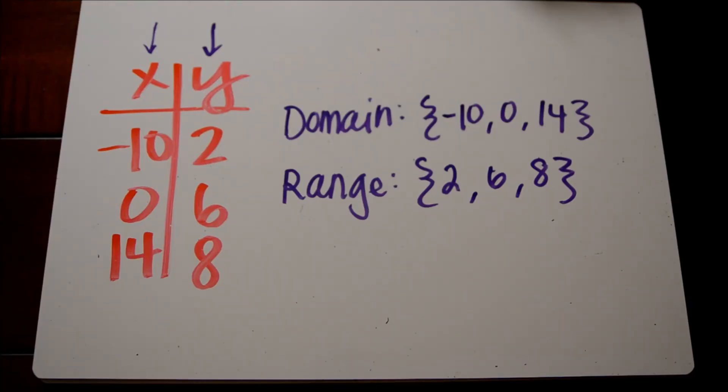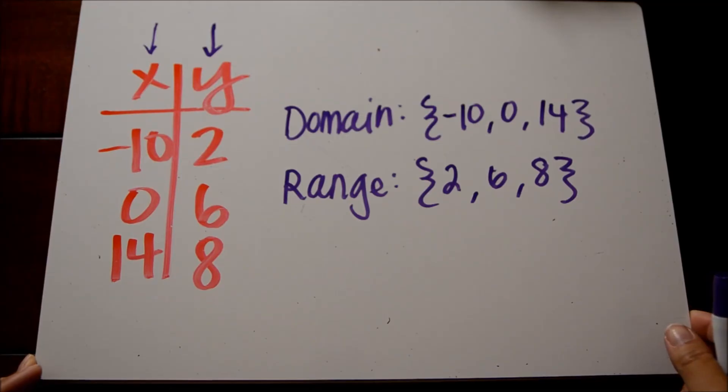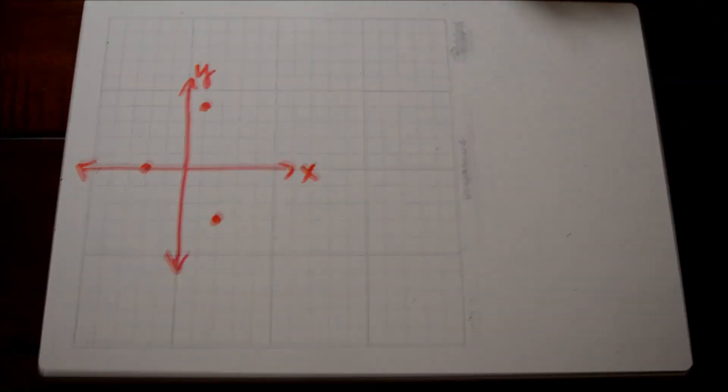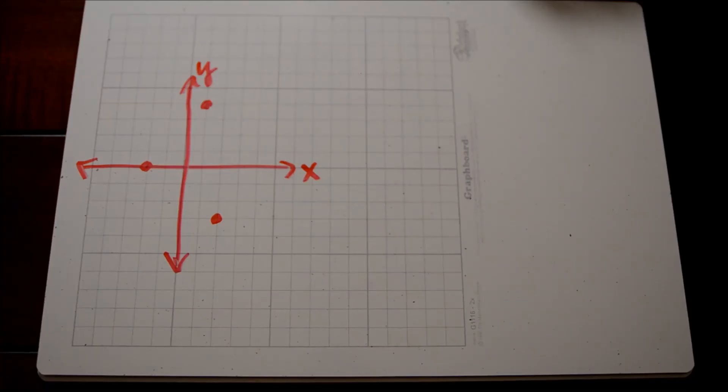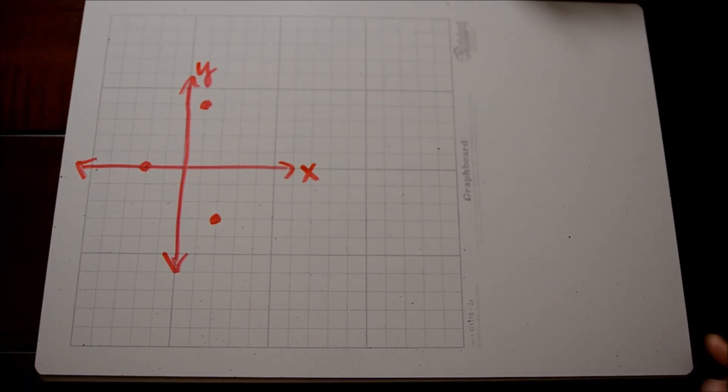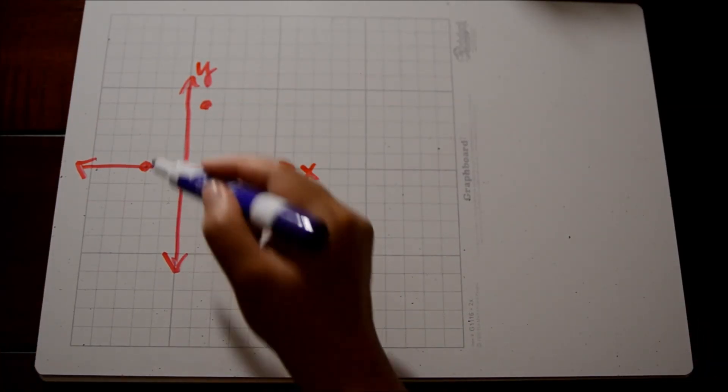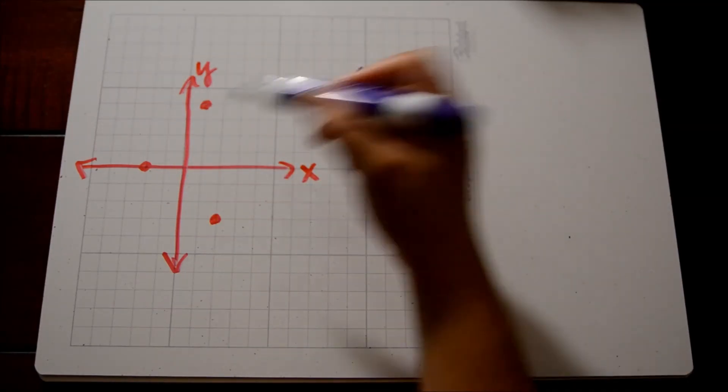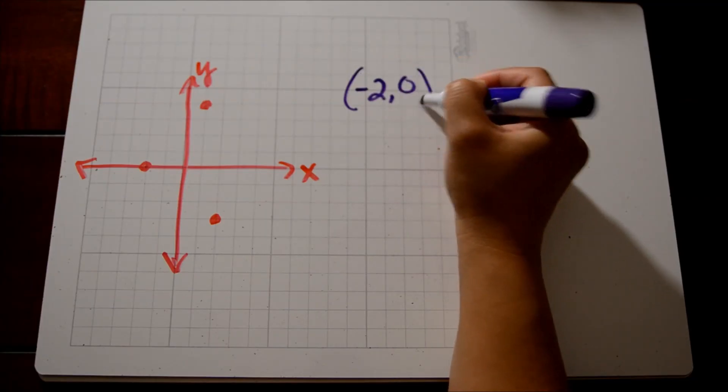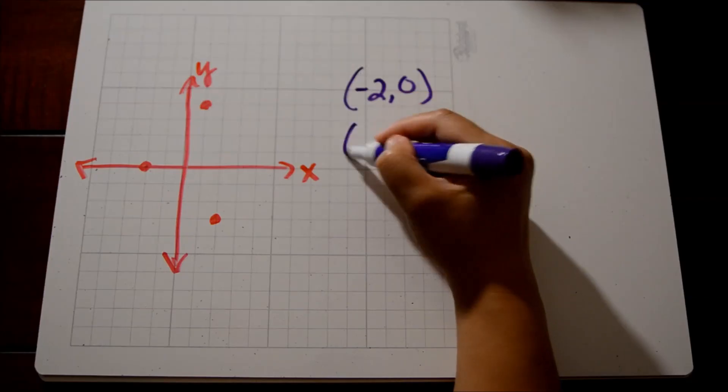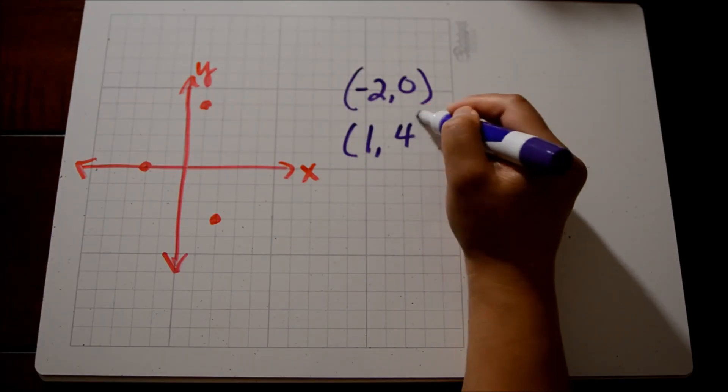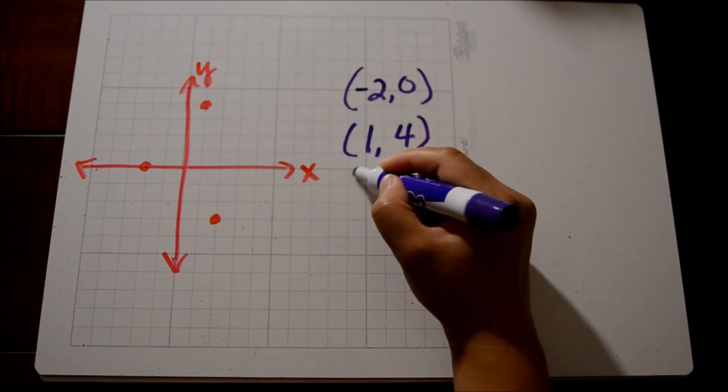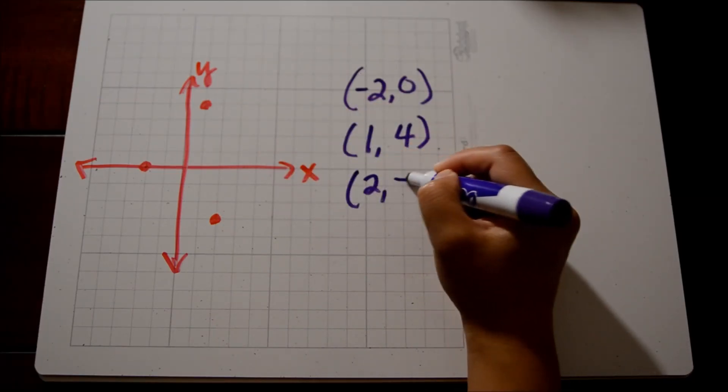And for our last example, let's take a look at a discrete graph. If you're given a discrete graph, it would be a good idea to list out the ordered pairs on your graph. So we have three points here. Let's go ahead and list those out. This first point is negative 2, 0. The second point is 1, 4. And the last one is 2, negative 3.